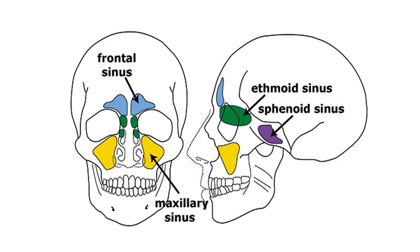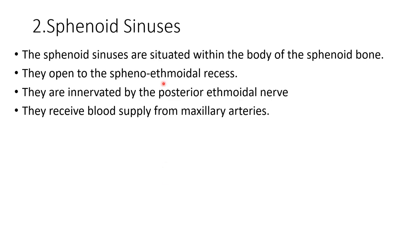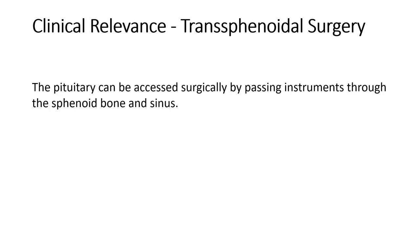Draw this picture in your answer booklet. Then explain about each sinus. For the frontal sinuses: there are 2, located within the frontal bone, triangular in shape, and are the superior-most of all sinuses. They are drained by the frontonasal duct, innervated by the supraorbital nerve, and arterial supply is via the anterior ethmoidal artery. For the sphenoid sinus: located within the body of the sphenoid bone, opens into the sphenoethmoidal recess, innervated by the posterior ethmoidal nerve, and arterial supply is from maxillary arteries. A clinical note — trans-sphenoid surgery allows surgical access to the pituitary through the sphenoid bone and sinus.